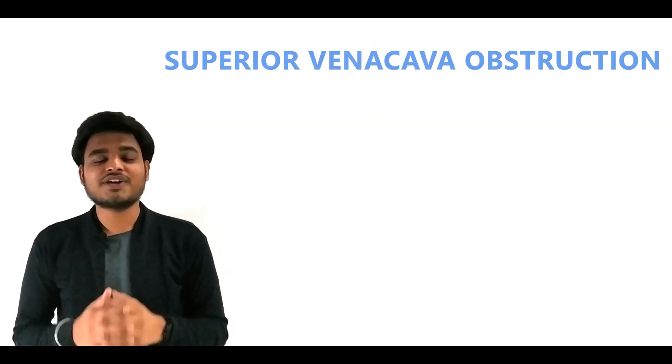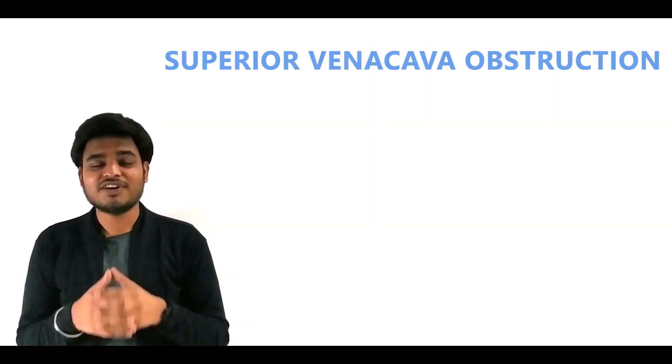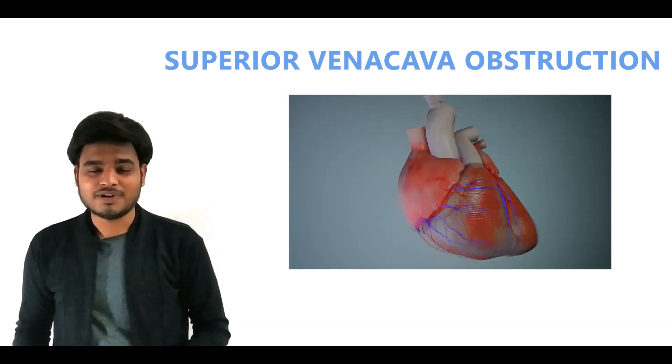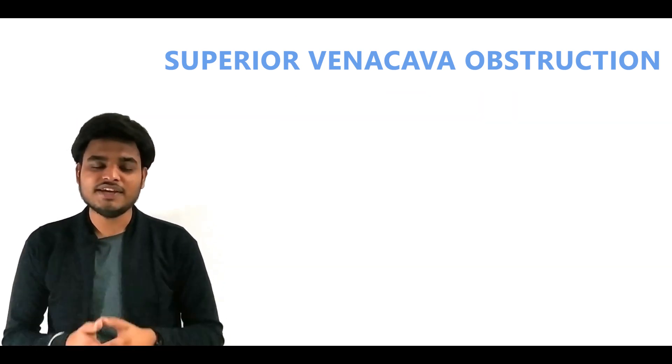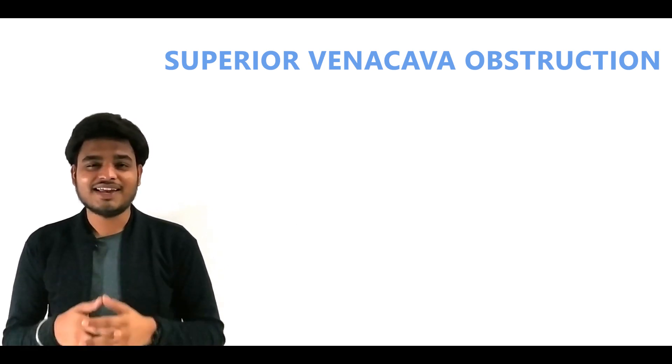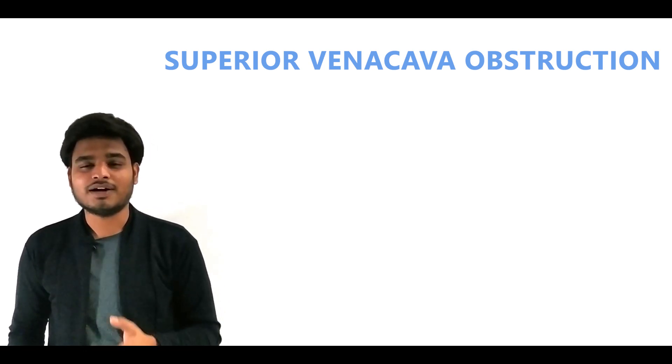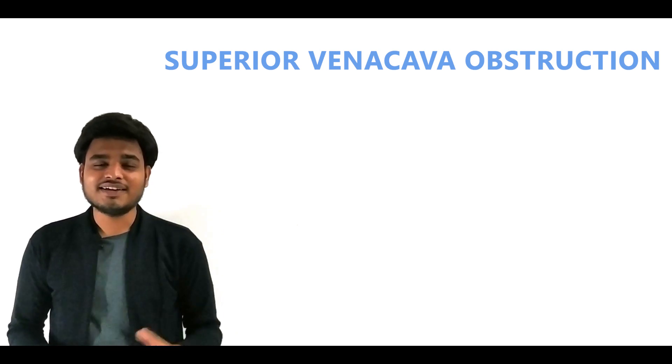Number two: superior vena cava obstruction. The superior vena cava is a venous trunk of the heart which supplies blood to the upper portion of the body—that is, the head, chest, and arms. In obstruction of the superior vena cava, there is a loss of venous drainage from this upper part. As a result, there is an increase in venous pressure and an increase in jugular venous pressure.